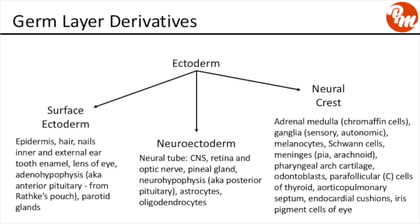Starting with ectoderm, we can see that ectoderm can be divided into three portions: surface ectoderm, neuroectoderm, and the neural crest. With regards to surface ectoderm, the derivatives include epidermis, hair, nails, inner and external ear, tooth enamel, the lens of the eye, the adenohypophysis — otherwise known as the anterior pituitary, which comes from Rathke's pouch — and the parotid glands.